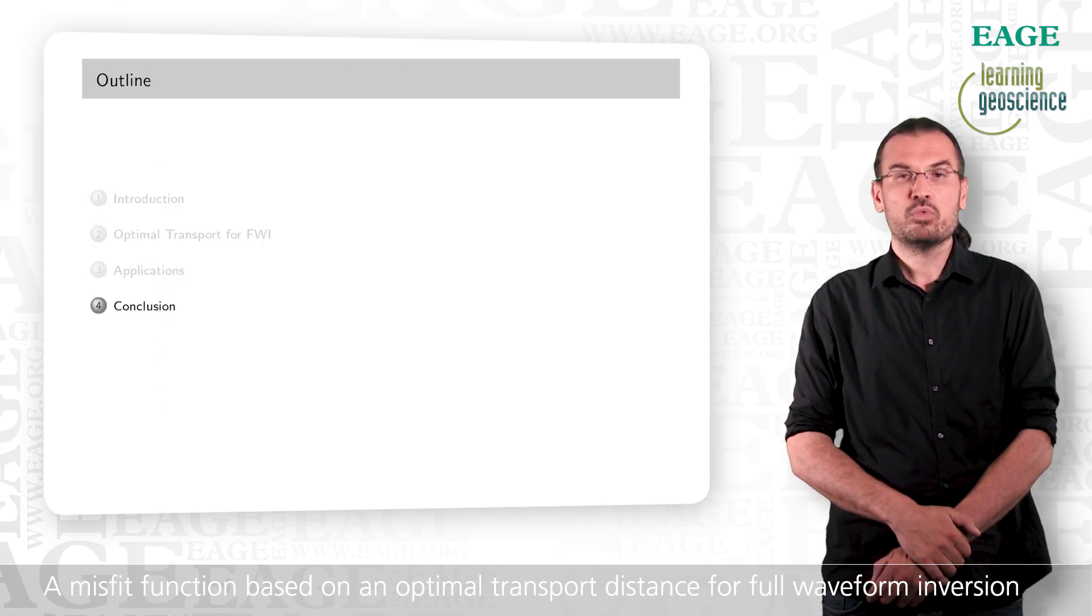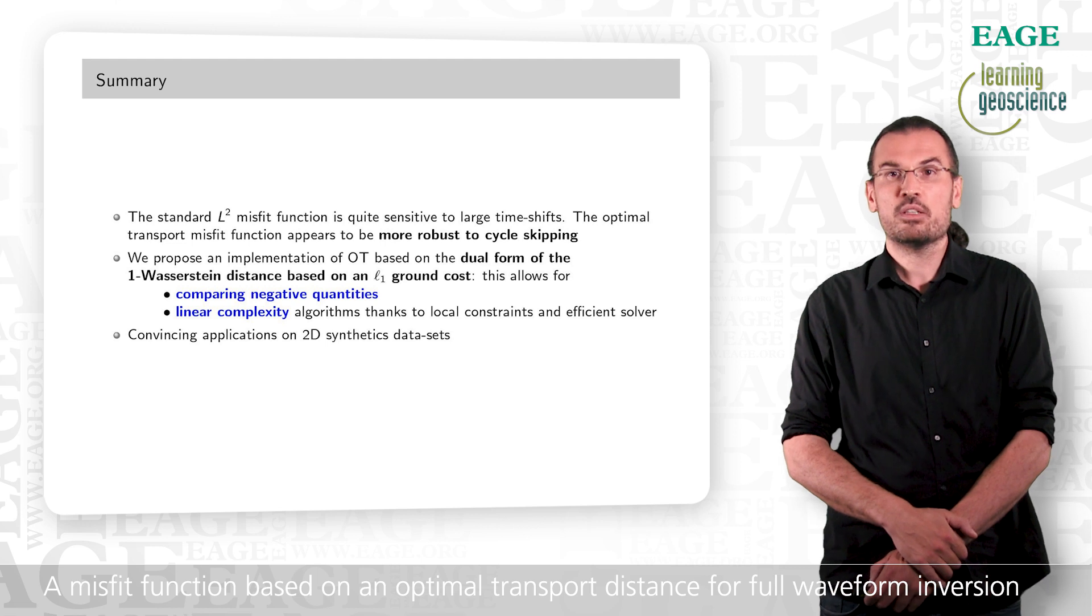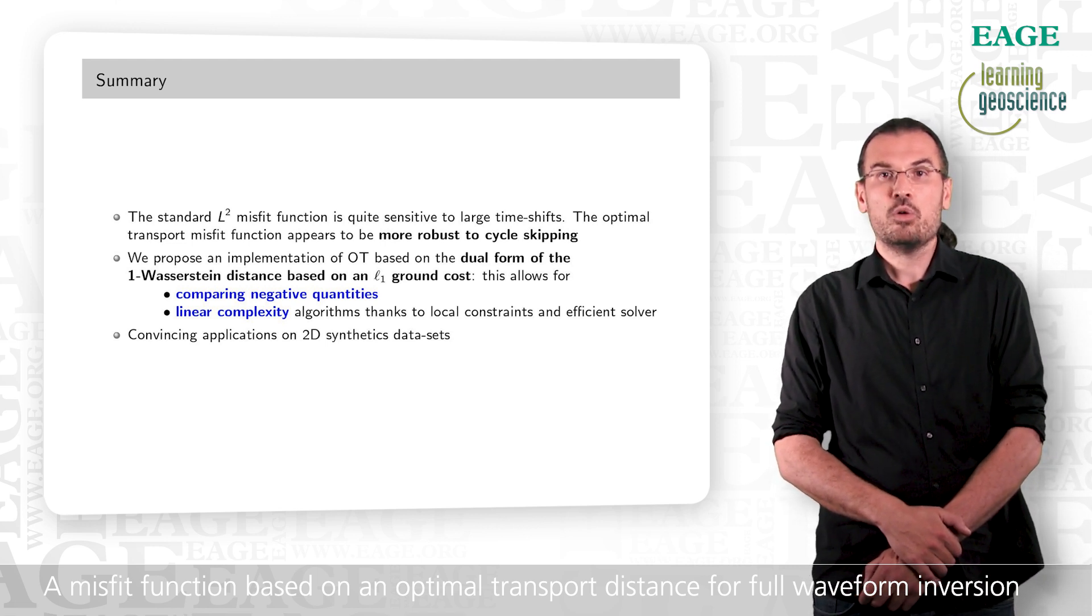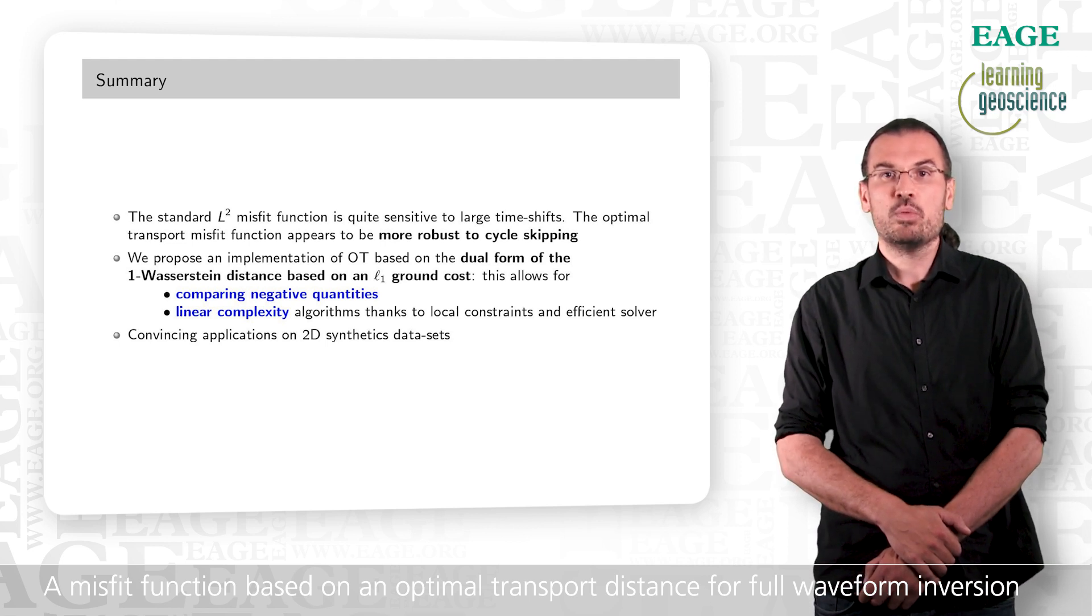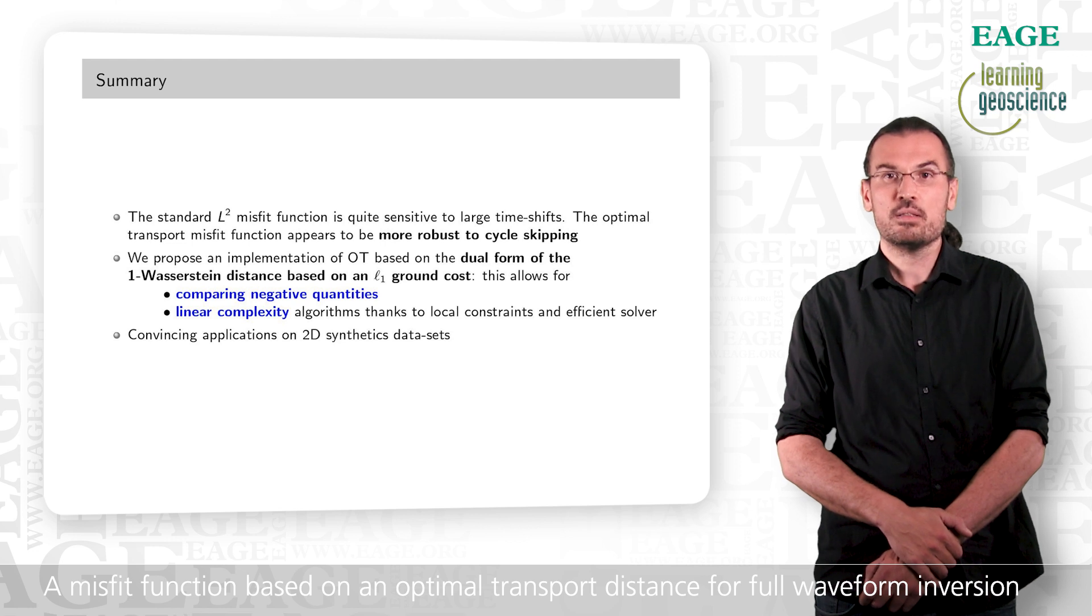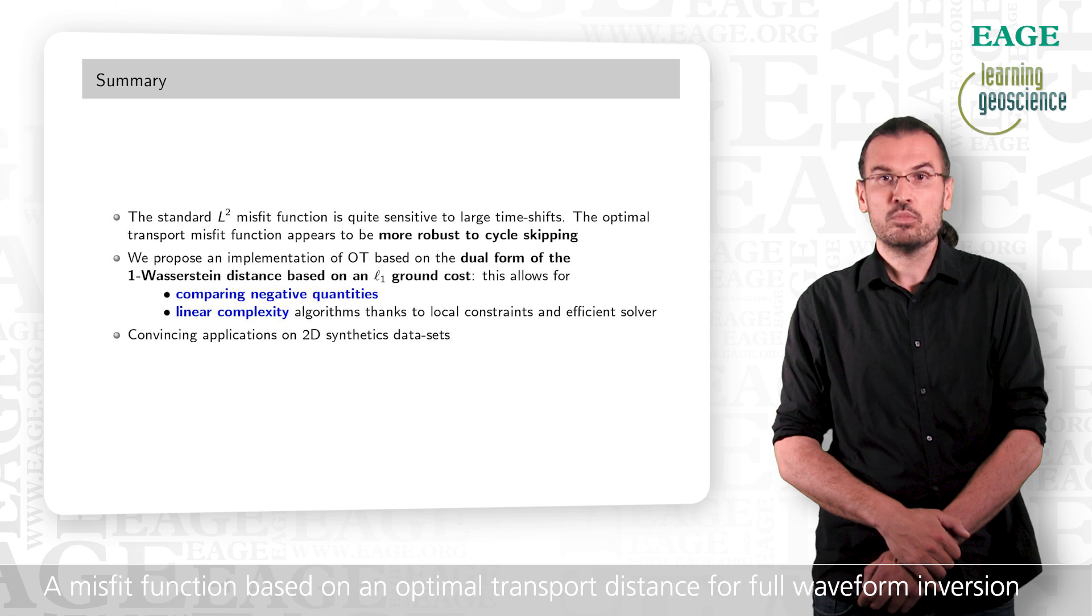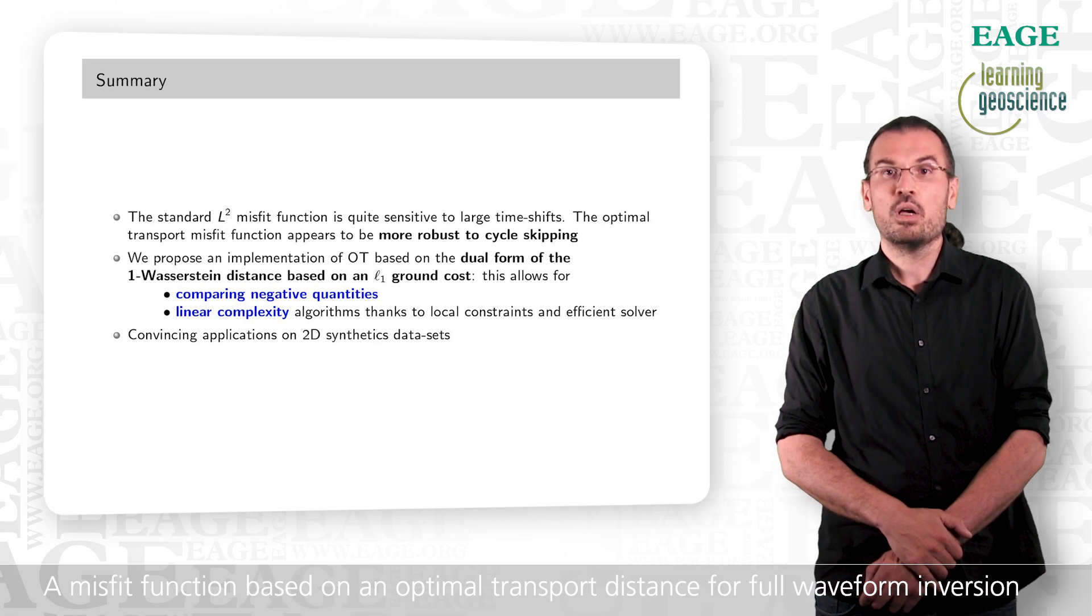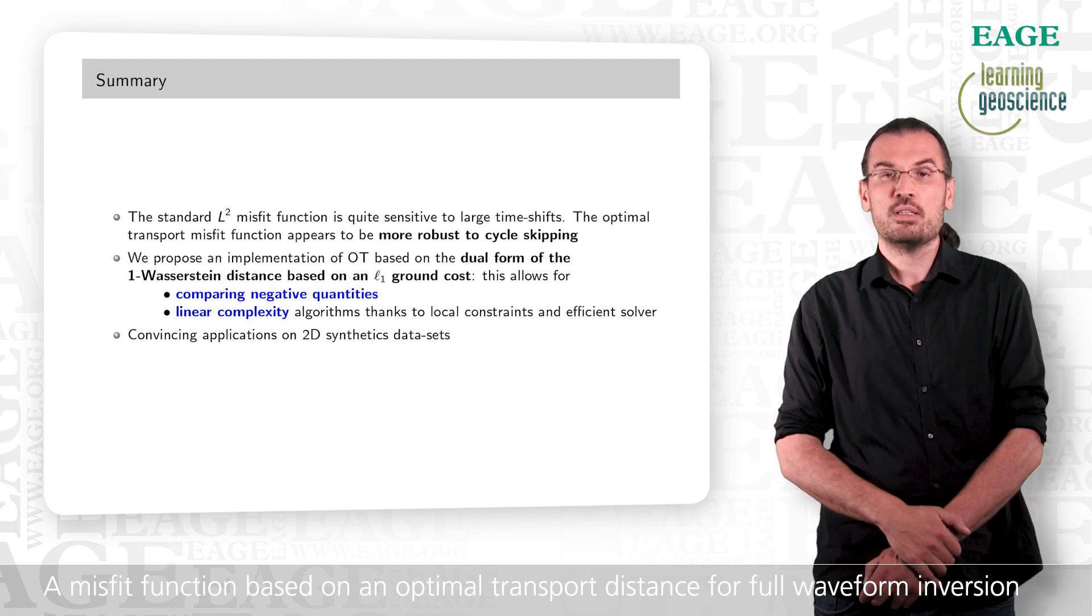It is time now to conclude, but we can say that we know that the least squares approach is not robust for cycle skipping. Optimal transport approach might be a solution to mitigate this issue. We propose an implementation which is based on a particular instance of an optimal transport distance, which is the Wasserstein 1 distance with the L1 ground cost. This allows to handle non-positive data and to derive an efficient numerical algorithm to approximate the solution of the underlying transport problem. We show convincing results on two 2D synthetic applications.